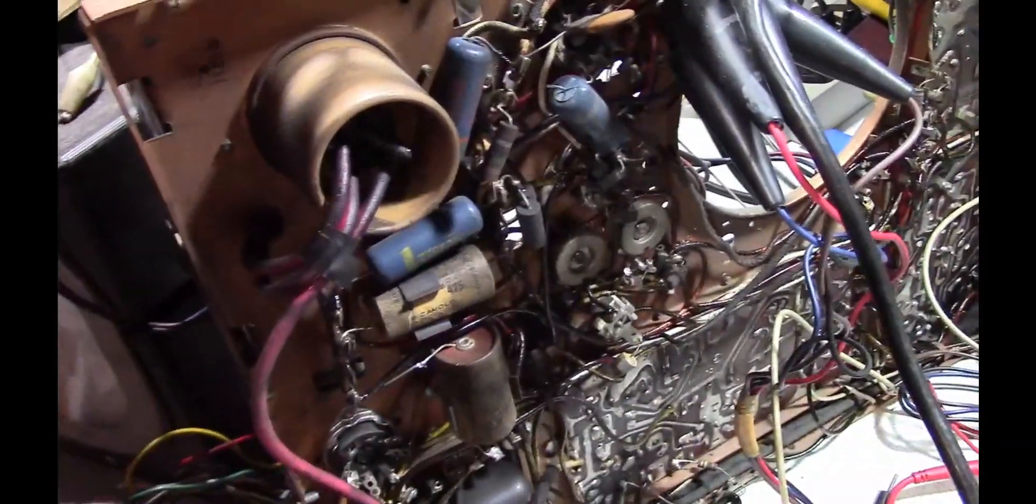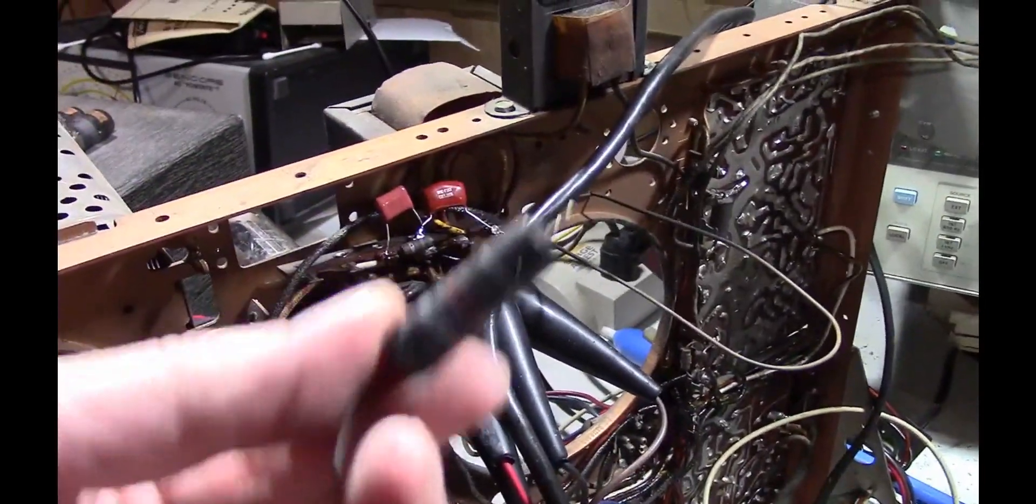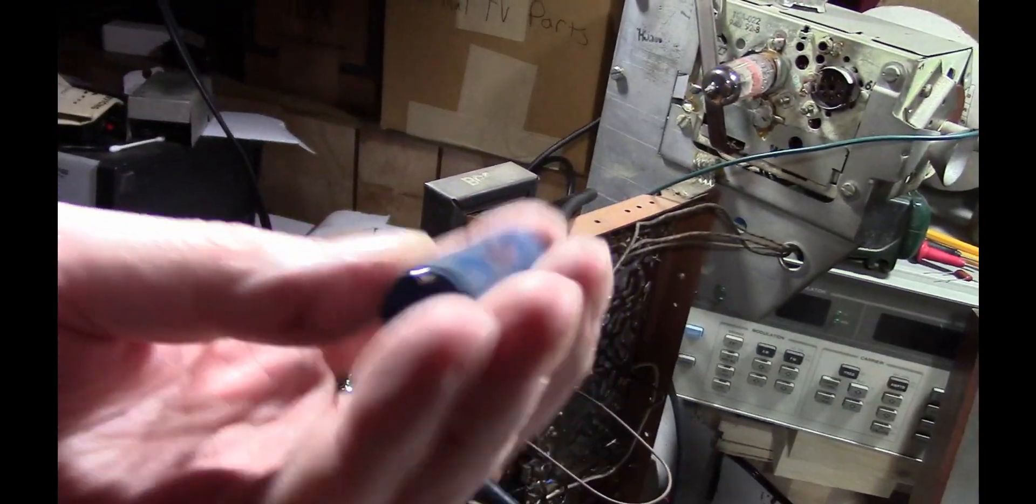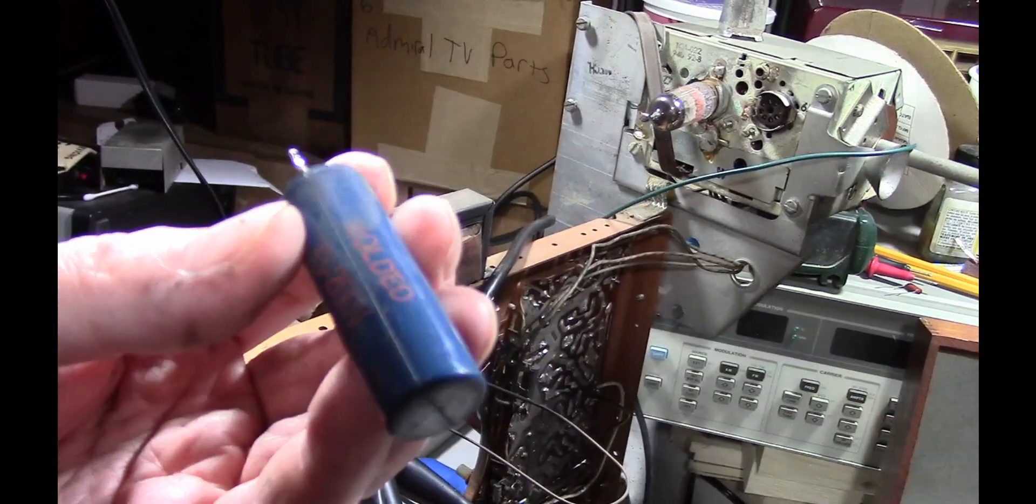However, when I checked some of these Black Beauty or Bumblebee caps, they were definitely leaky so I've replaced a couple of them here. So now I'm curious, what are these made out of? So I'm going to crack one of them open to know for sure.